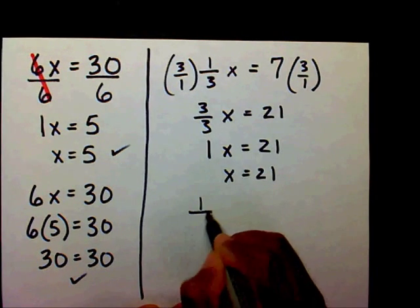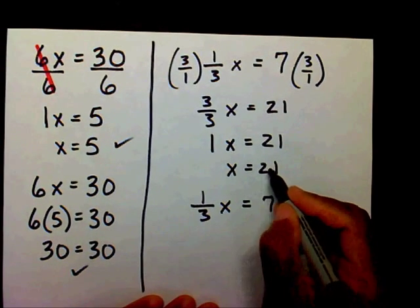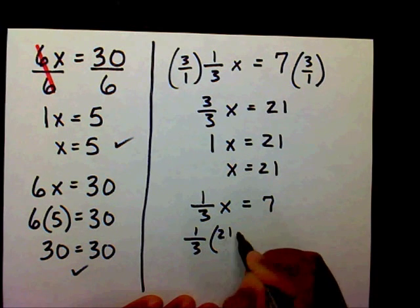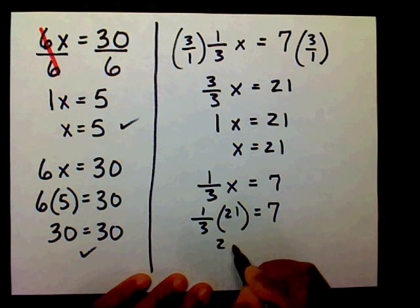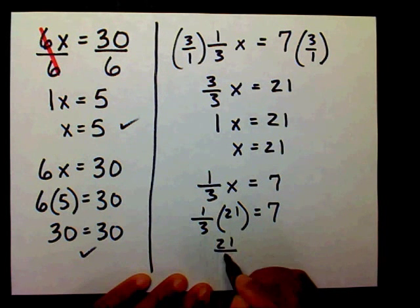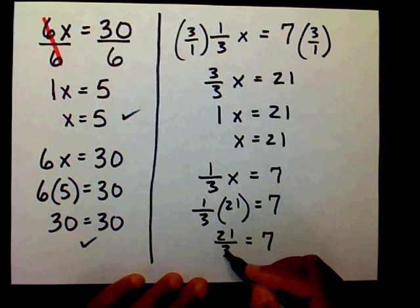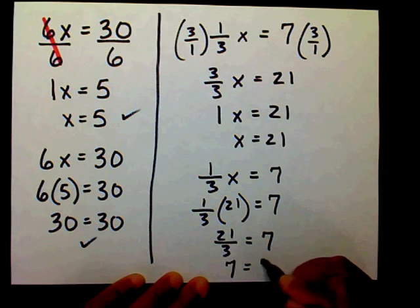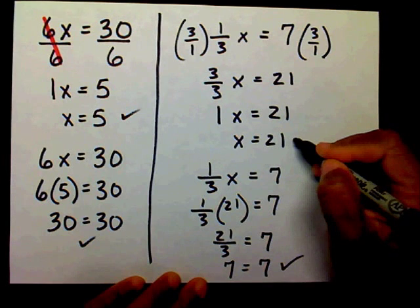So let's check it. 1/3 x equals 7. I want to substitute 21 in for my x. 1 times 21 is 21, 1 times 3 is 3 equals 7. 21 divided by 3, that is 7. 7 on this side, 7 on this side, it works. And so therefore we know that x equals 21.